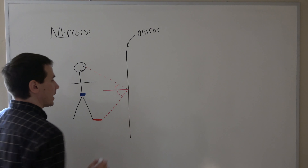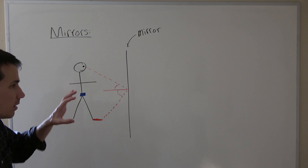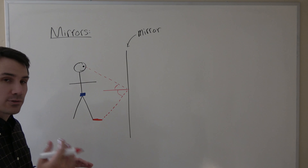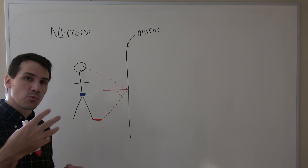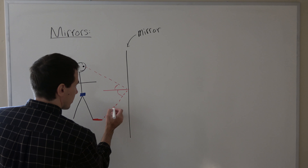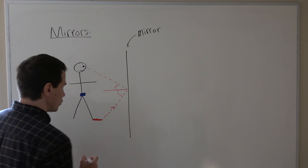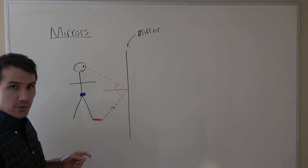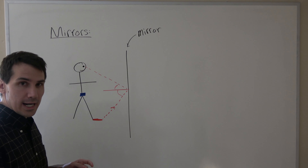These two angles that I've drawn are going to be the same — that's what I mean by it reflects at the same angle of incidence. This is our incident light coming from your red shoes, bouncing off the mirror, and entering your eye.